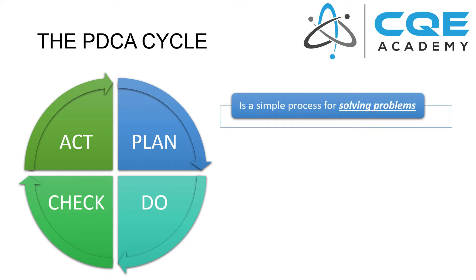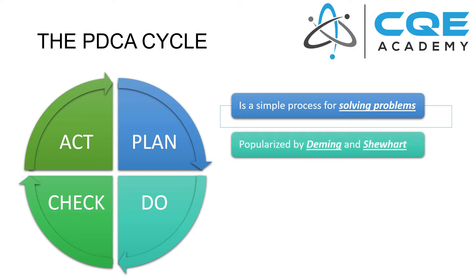The first is that it is a very simple process for solving problems. As quality engineers or continuous improvement experts, our jobs are to be continuously solving problems. And if you want effective and efficient results and you want to be an expert at solving problems, you should be using a problem-solving process. And that's exactly what plan-do-check-act is.